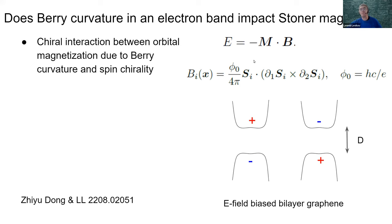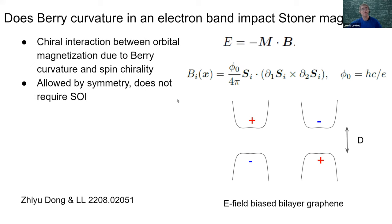The goal is to derive this interaction and discuss its effects. Interestingly, this is an interaction between a spin quantity b and an orbital quantity m arising without any spin-orbit interaction. It is an interesting case of what we might call a synthetic spin-orbit interaction.